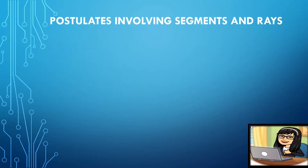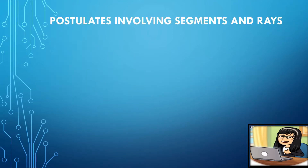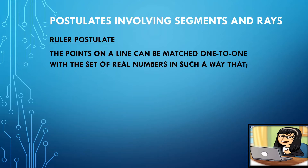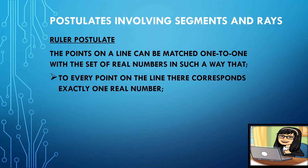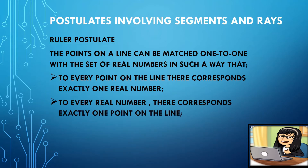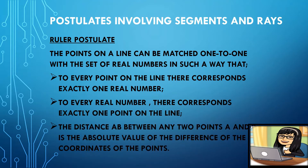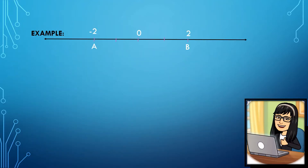Let's start with postulates involving segments and rays. Ruler Postulate: this states that points on a line can be matched one-to-one with a set of real numbers, such that to every point of the line there corresponds exactly one real number, and to every real number there corresponds exactly one point on the line. The distance AB between any two points A and B is the absolute value of the difference of the coordinates of the points. To explain the postulate, let's have this figure — we have a number line with zero, two, and negative two as real numbers.